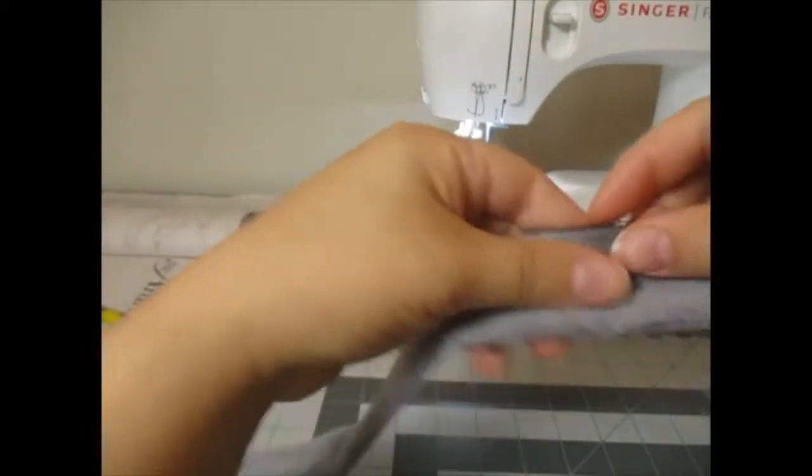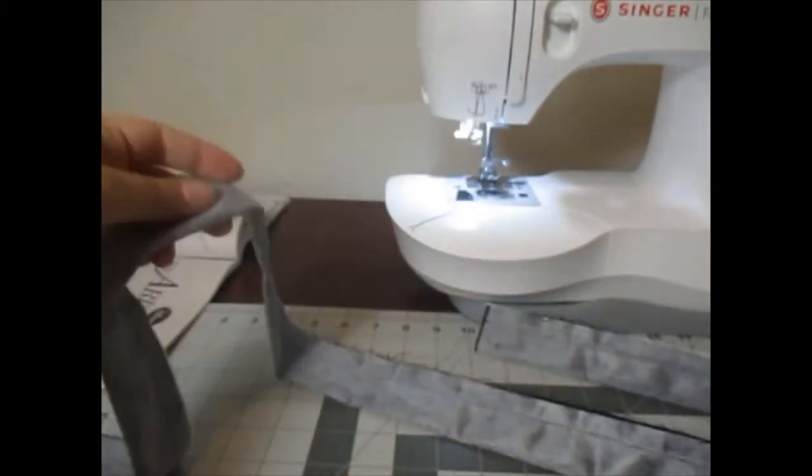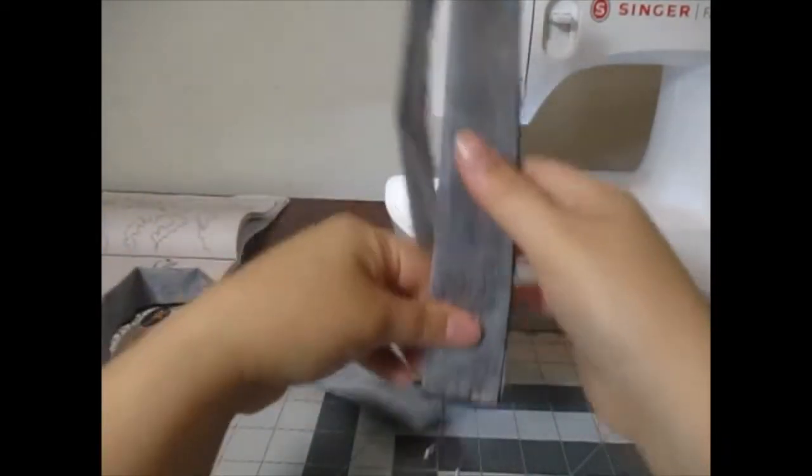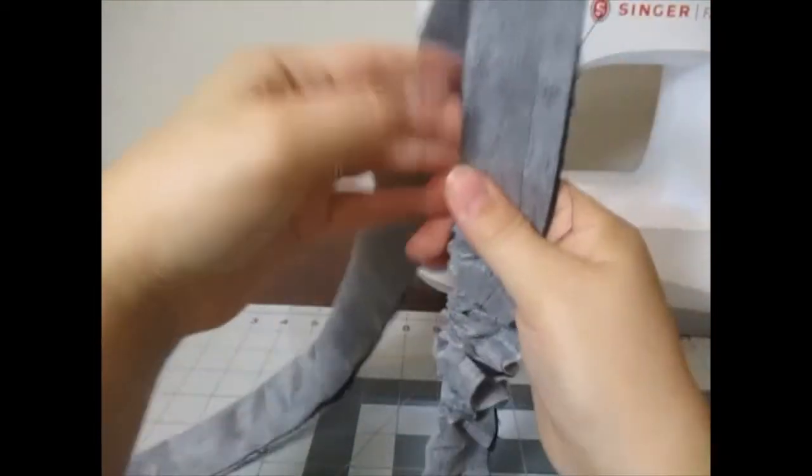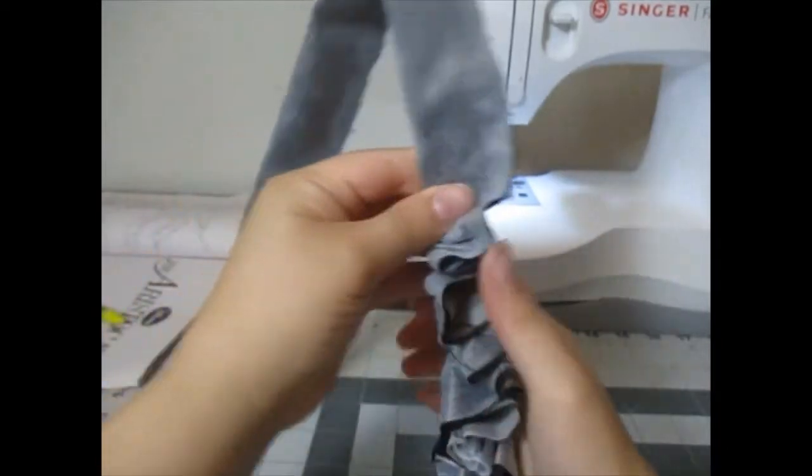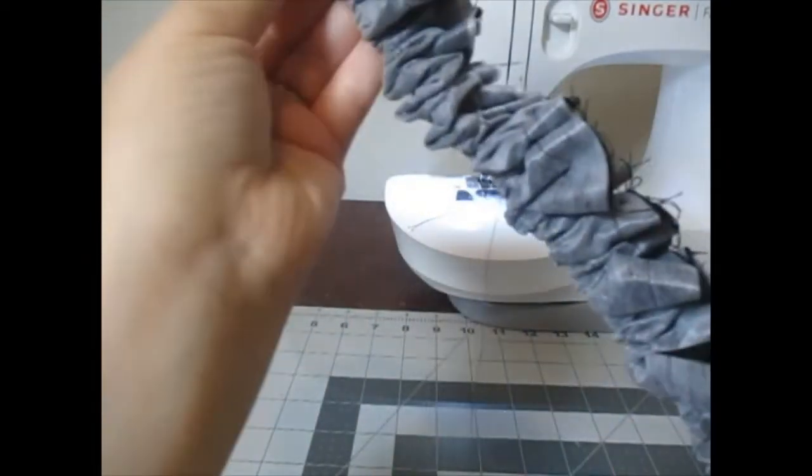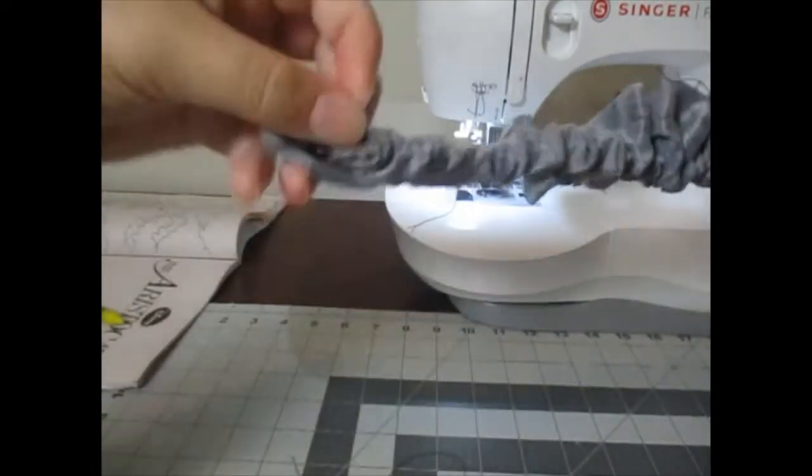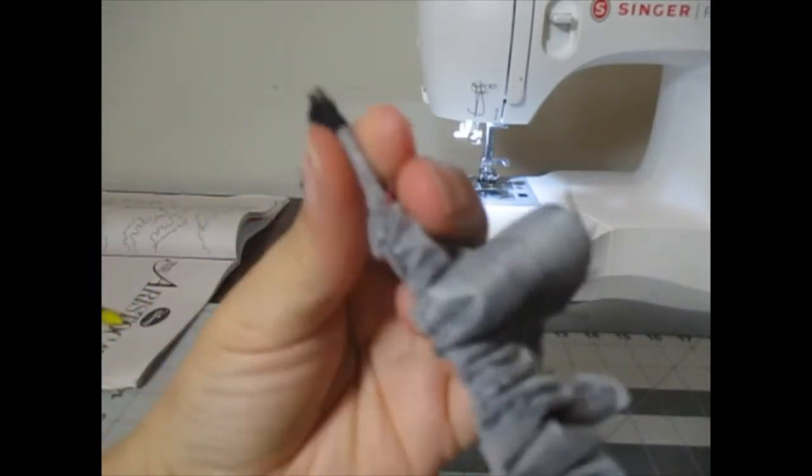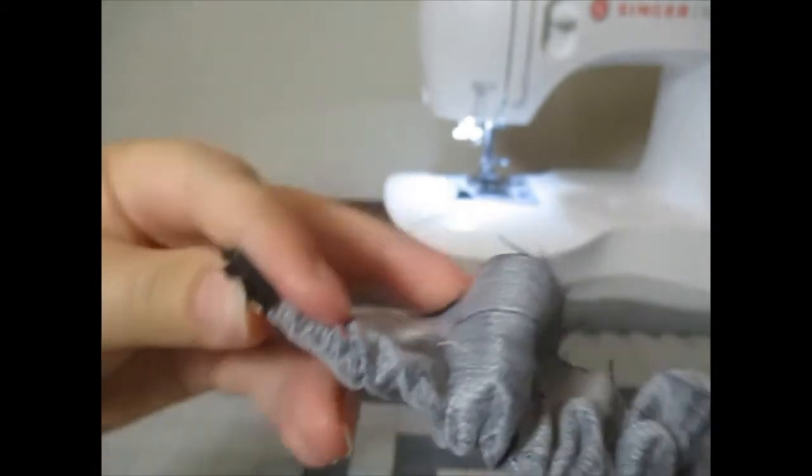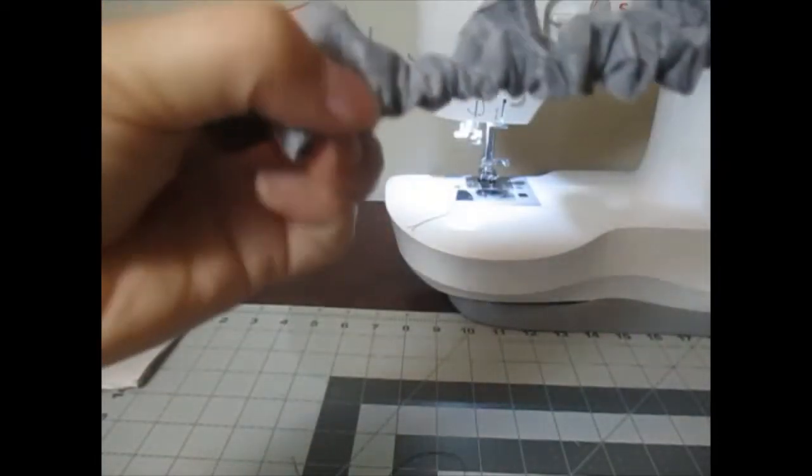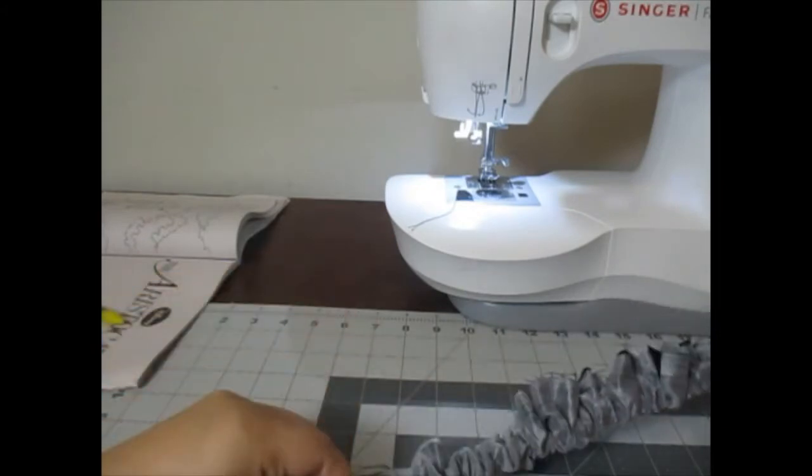All right, now that your strap is completely sewn, now what you're going to do is you're going to take your loop turner just like this and you're going to put it in through one side of your strap. You're going to push it all the way down just like this. Now turning a loop takes some getting used to. Sometimes I still have trouble, especially for a strap that is this thin.